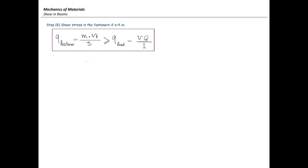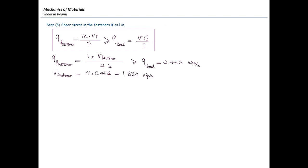For Case 2, the fastener spacing is given as 4 inches and we want to find the shear stress in each fastener. Using the same design equation but now solving for V_F, with S equal to 4 inches and VQ/I equal to 0.458 kips per inch, we determine the force developed in each fastener. Dividing that force by the bolt area gives a shear stress of 4.15 ksi. This demonstrates how one design equation can be used to solve for either spacing or fastener stress depending on what is unknown.